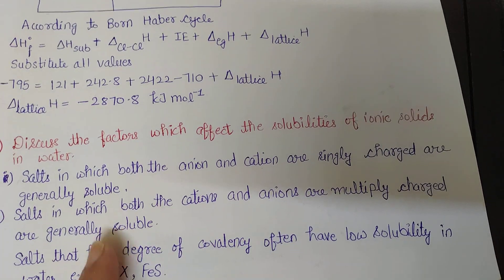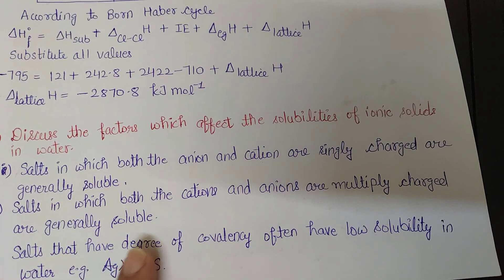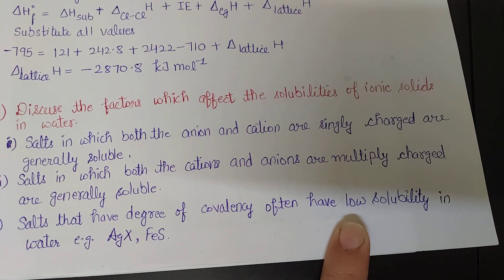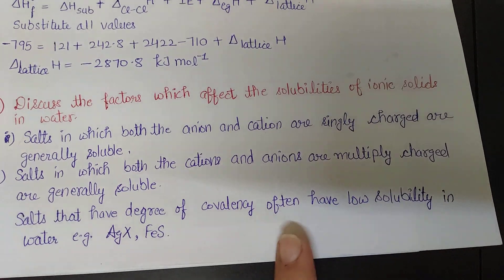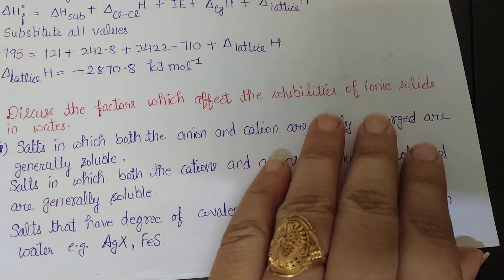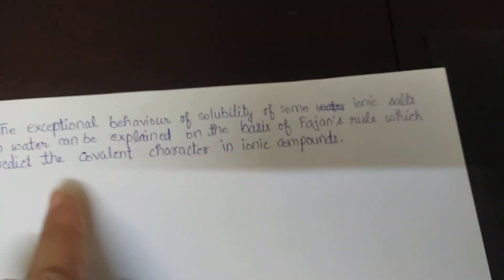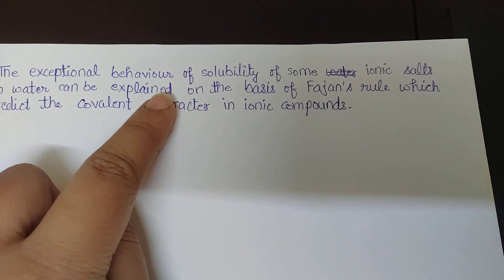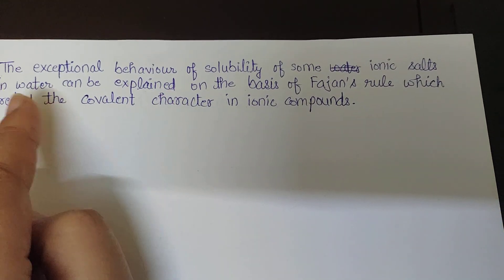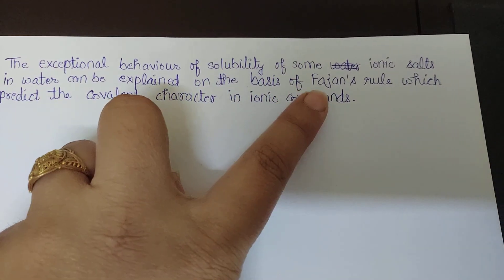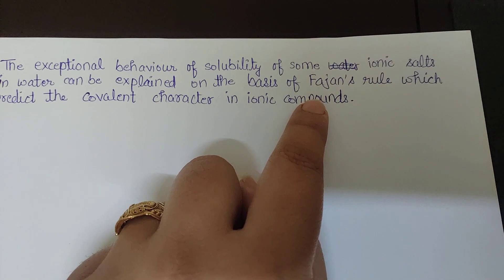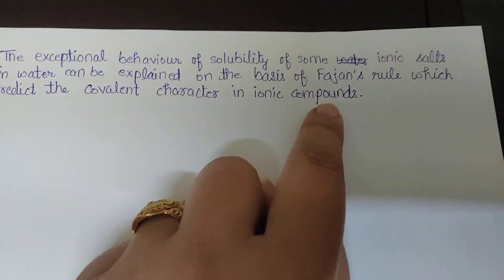Salts in which both cations and anions are multiply charged are generally less soluble. Salts that have a degree of covalency often have low solubility — for example, silver salts or ferrous sulfide. There are exceptional cases regarding the solubility of ionic compounds in water, which can be explained on the basis of Fajans' rule, though we do not need to explain Fajans' rule in detail here.